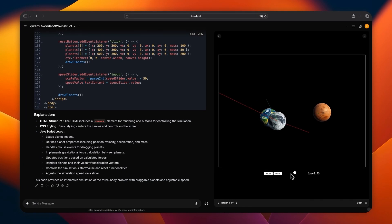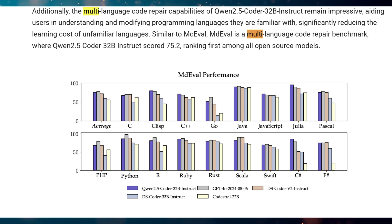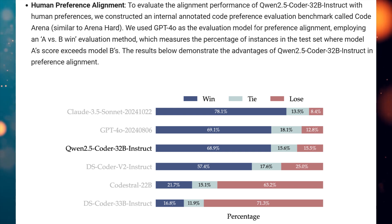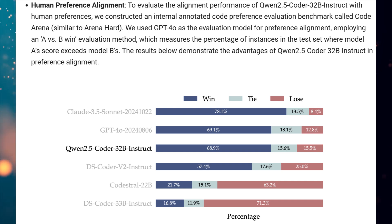And when it comes to code reasoning, Qwen 2.5 Coder truly shines. This model can understand the logic behind code, predict outputs, and even reason about complex code structures. One of the most exciting aspects of Qwen 2.5 Coder is its multilingual support — it's proficient in over 40 programming languages, making it an incredibly versatile tool for developers working across different platforms and projects. The Qwen team has also gone the extra mile to ensure alignment with human preferences. They've created a benchmark called Code Arena to evaluate this alignment using GPT-4o as a reference point. The results show that Qwen 2.5 Coder excels in producing code that humans find clear, concise, and easy to understand.